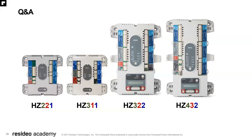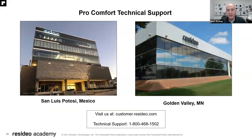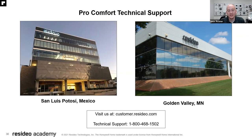If there are additional questions or you think of something later on, we're always here to help. We have two teams located in San Luis Potosí and Golden Valley, Minnesota — our pro comfort technical support teams, our level two teams that support technicians in the field. These guys are highly skilled and ready to help. If you need any assistance, reach out to us at customer.resideo.com or resideo.com/pro. You can also call us at 1-800-468-1502 Monday through Friday.